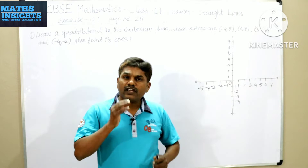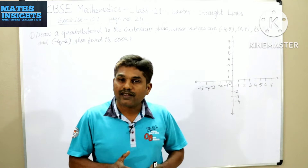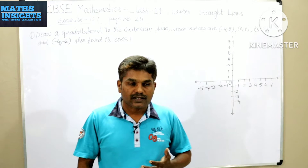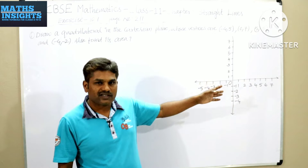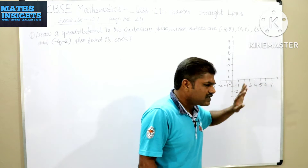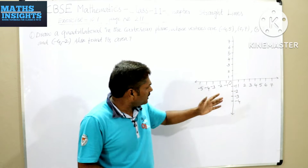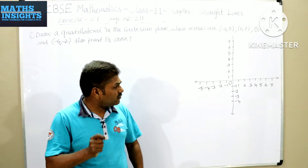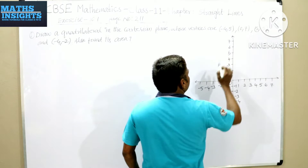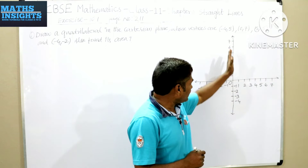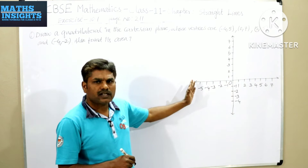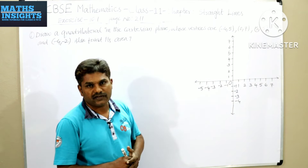Before drawing the quadrilateral, you have to observe what are the minimum and maximum values of the x-coordinates and y-coordinates. Depending on those, you will draw the positive x-axis, negative x-axis, positive y-axis, and negative y-axis. The horizontal line is called the x-axis and the vertical line is called the y-axis. These meet at a point called O, which is called the origin. The right side of the y-axis has positive x values, and the left side has negative x values.